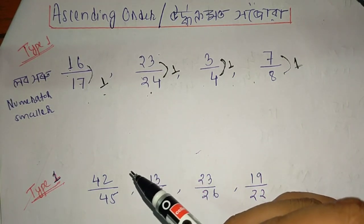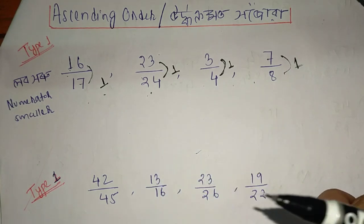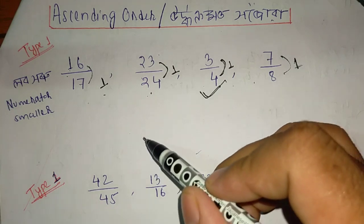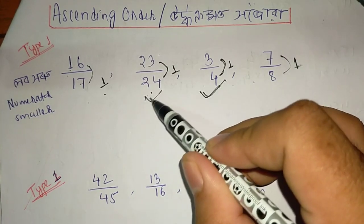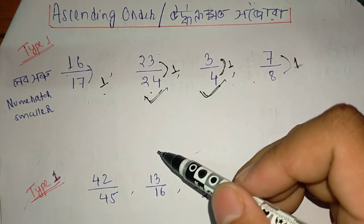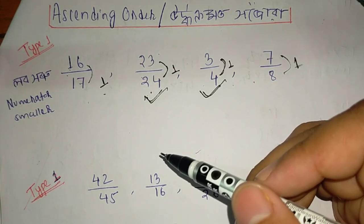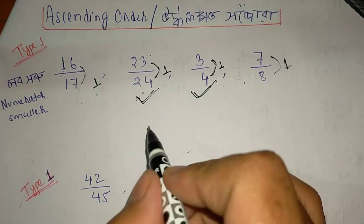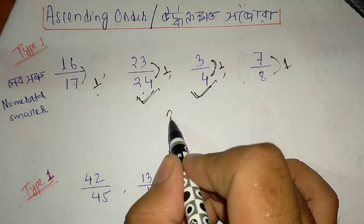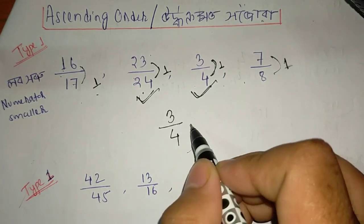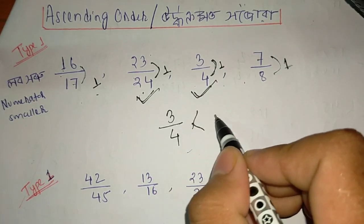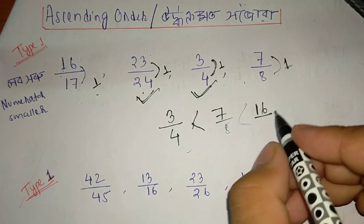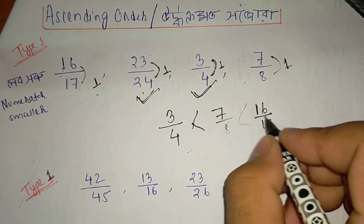The difference for 3 by 4 is 2. 3 by 4 is a higher fraction; 23 by 24 is a higher fraction. When the difference is higher, the fraction value is higher. 7 by 8 would be higher, and 16 by 17 would be next.